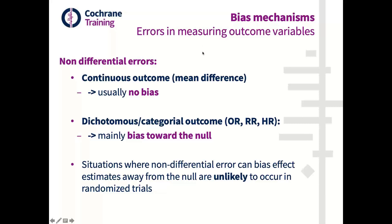What is the relationship between non-differential errors and bias? For continuous outcomes where we are interested in mean difference, there is generally no bias from non-differential errors. For dichotomous or categorical outcomes reported as odds ratio, risk ratio, or hazard ratio, if there is a bias it would mainly be a bias towards the null — towards showing no difference between the two groups. Situations where non-differential errors bias estimates away from the null are very unlikely in randomized controlled trials.